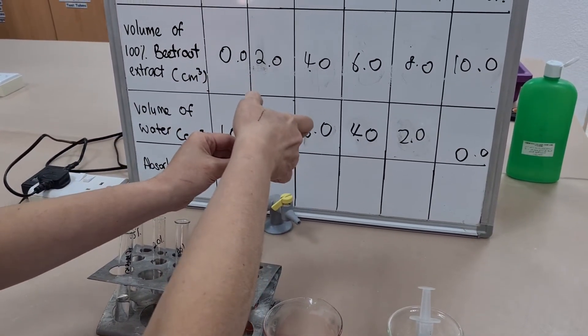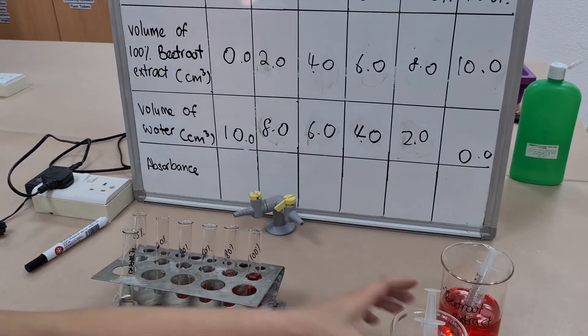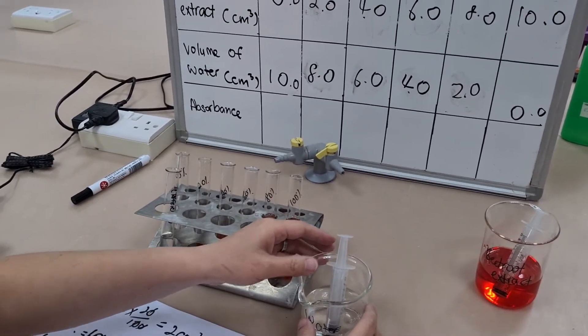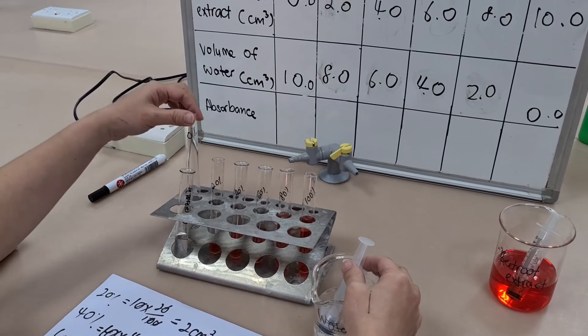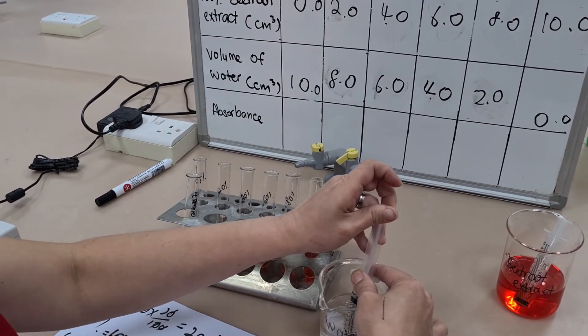So if I'm making 10 mils of each, then to make a 20 percent solution, I need to add two mils of my beetroot extract and I need to top it up with eight mils of water.